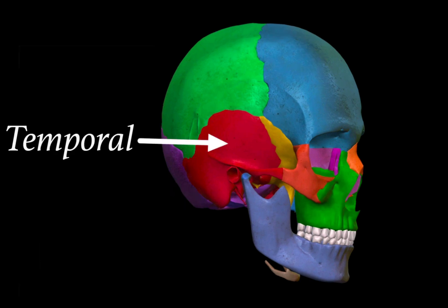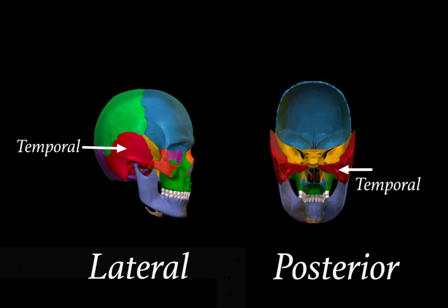The fourth bone is the temporal bone. It is related somewhat to the ear — you can remember it by connecting it with the tympanic membrane of the ear. The posterior view of the temporal bone is shown in the figure. After removing both the parietal and occipital bones, we get the posterior view of the red highlighted temporal bone.